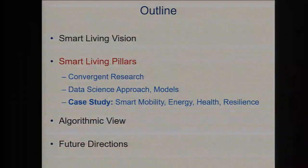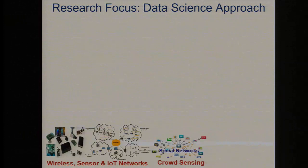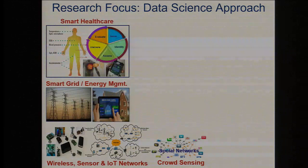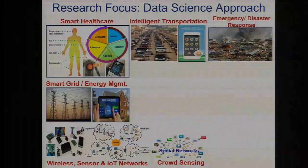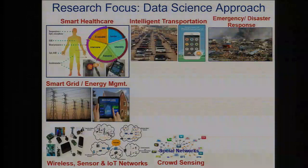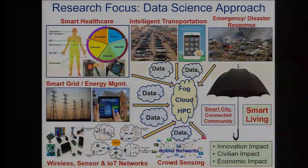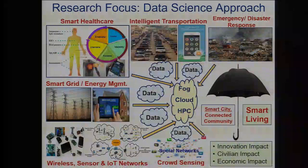Now let's go into the smart living pillars — convergent research and the data science approach, because everything is based on data we collect. We are doing a lot of research on wireless sensor networks, IoT, CPS, and crowd sensing — with different applications like smart grid, smart healthcare, smart transportation, and disaster response, which we also call resilience. Through smart devices we are collecting lots of data, reasoning about it, and developing smart solutions with huge economic and civilian impact.